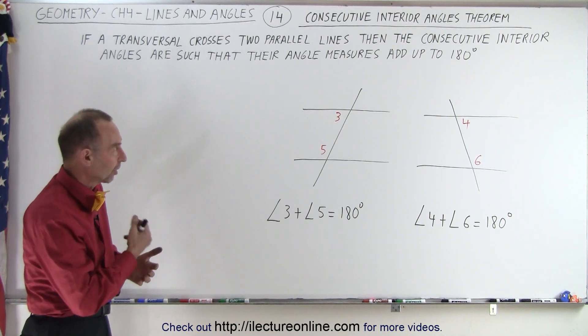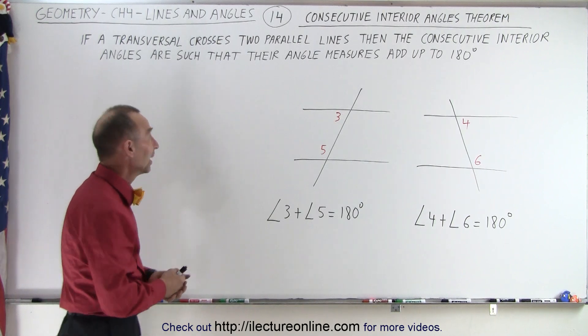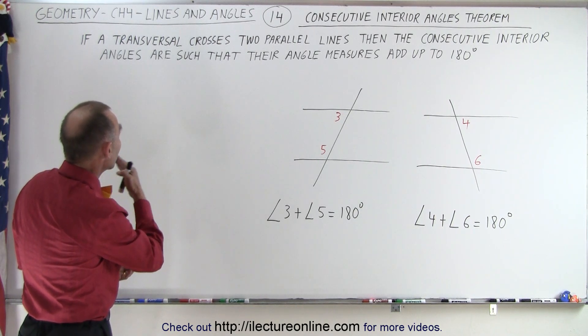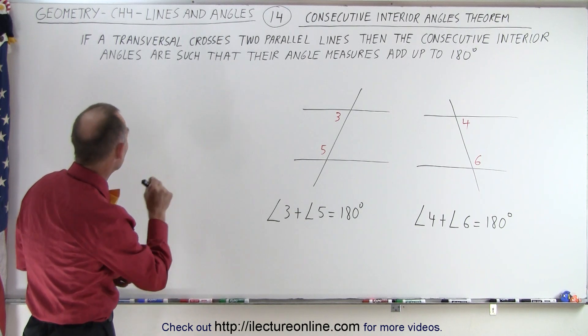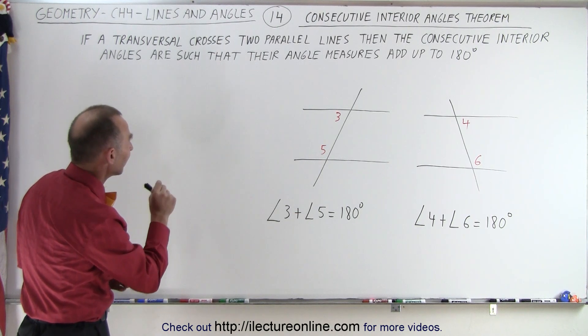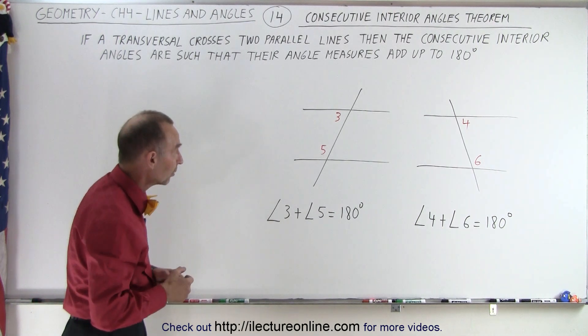There's a theorem about those consecutive interior angles. We call that the consecutive interior angle theorem. It states that if a transversal crosses two parallel lines, then the consecutive interior angles are such that their angle measures add up to 180 degrees, just like supplementary angles.